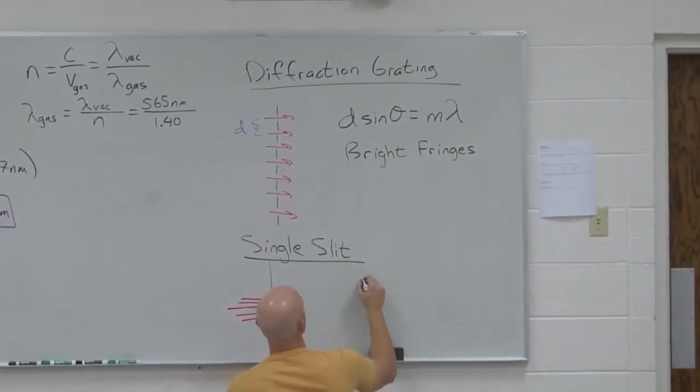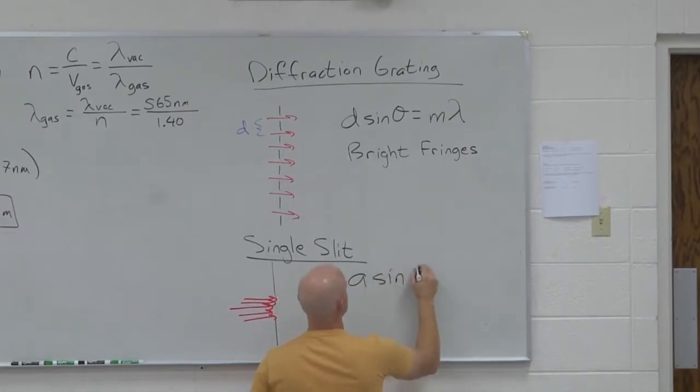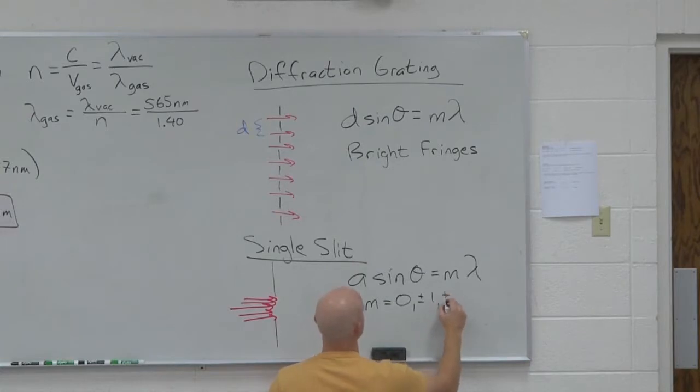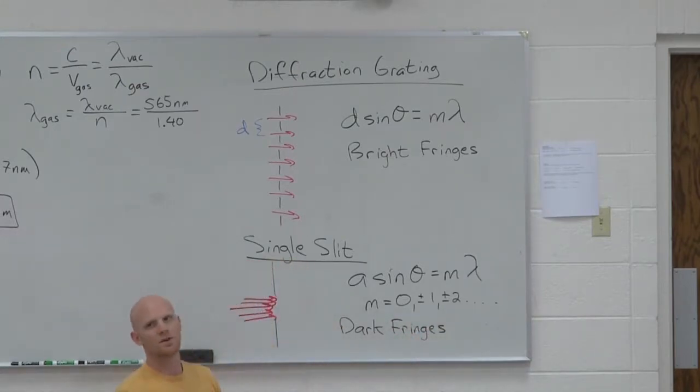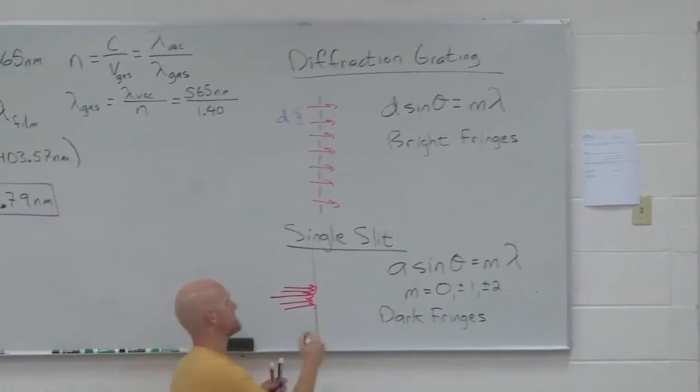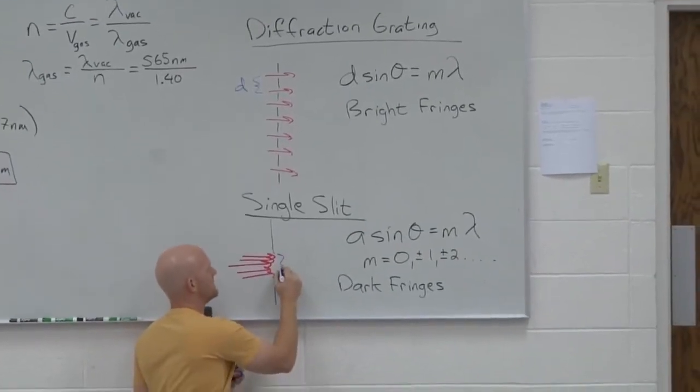I'm not going to derive this one but it would be derived in similar fashion. But a sin theta is equal to m lambda, where again m is still some integer. But in this case, if you actually look at the derivation, this tells you not where the bright fringes come, this tells you where you get the dark fringes from. So it seems a little bit funky, but it's based on the way it's defined.